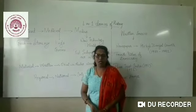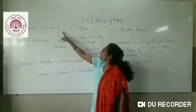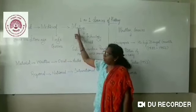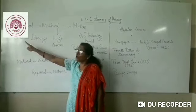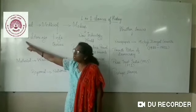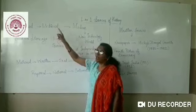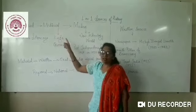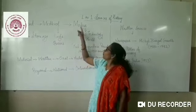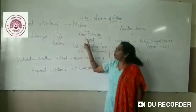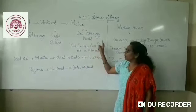Over the years we have learnt about the ancient period, medieval period, and modern period. The ancient period talks about Greek civilization and its history. In the medieval period you have learnt about kings and queens. In the modern period you have learnt about new technology and the modern world.